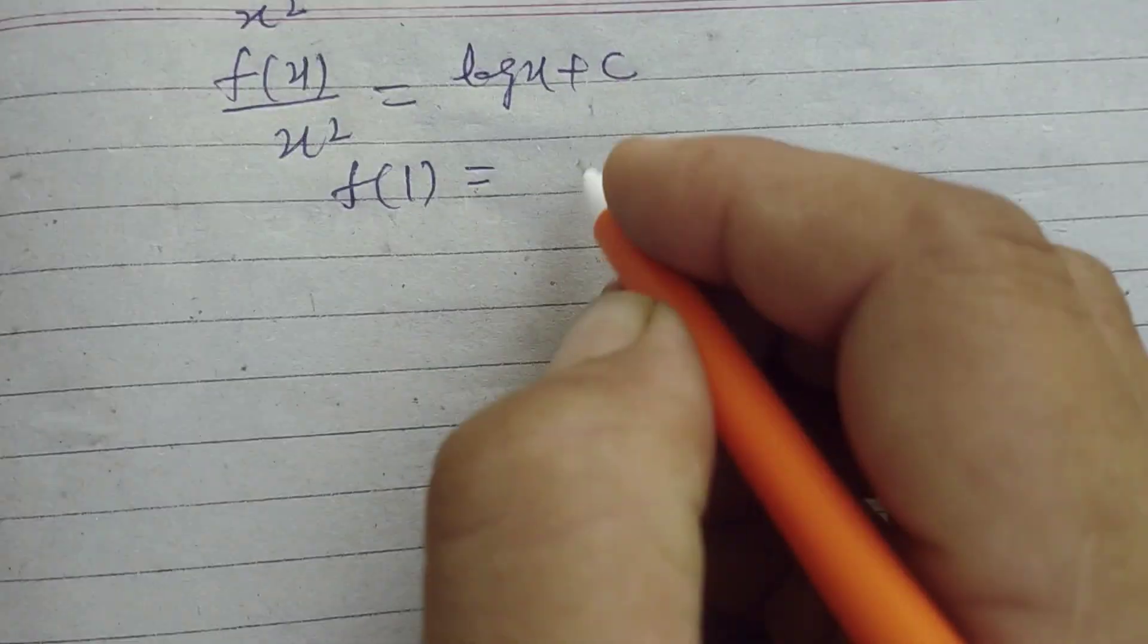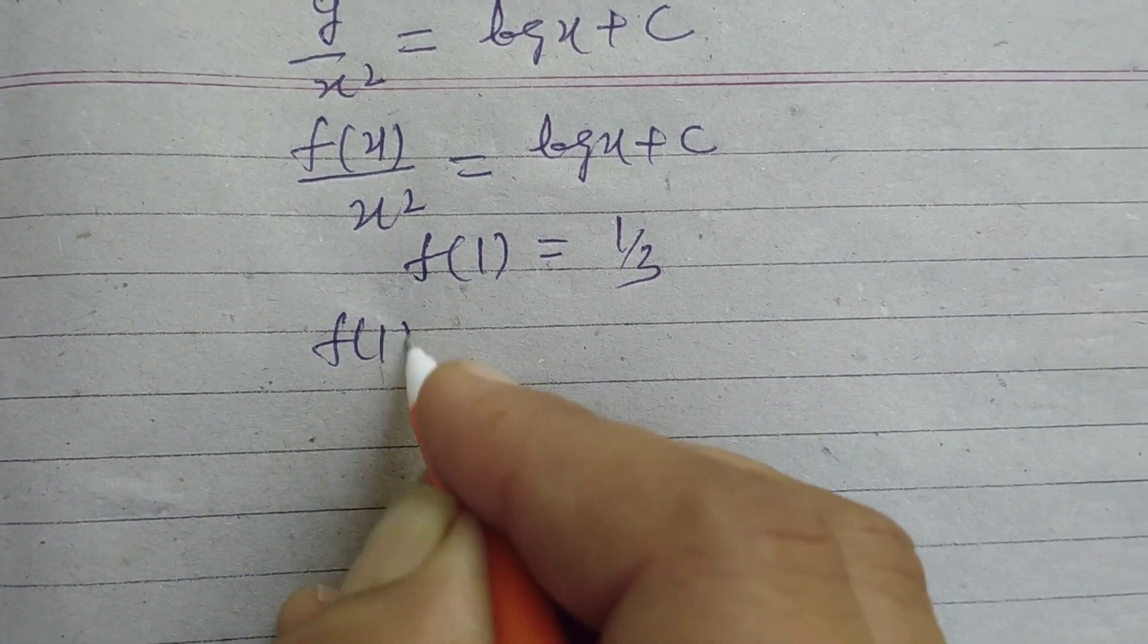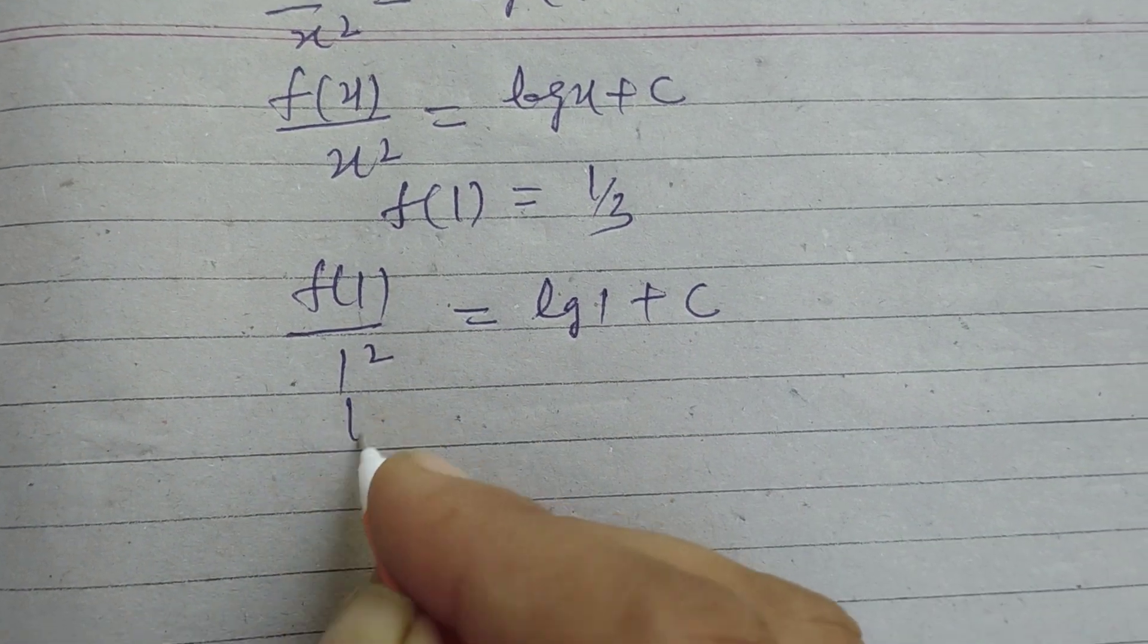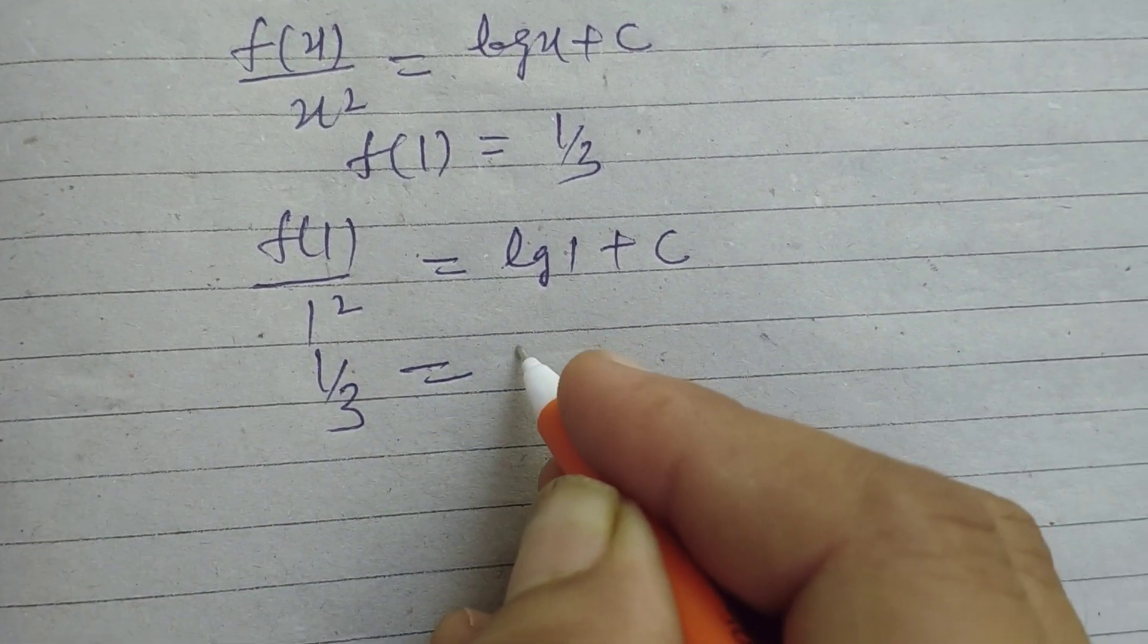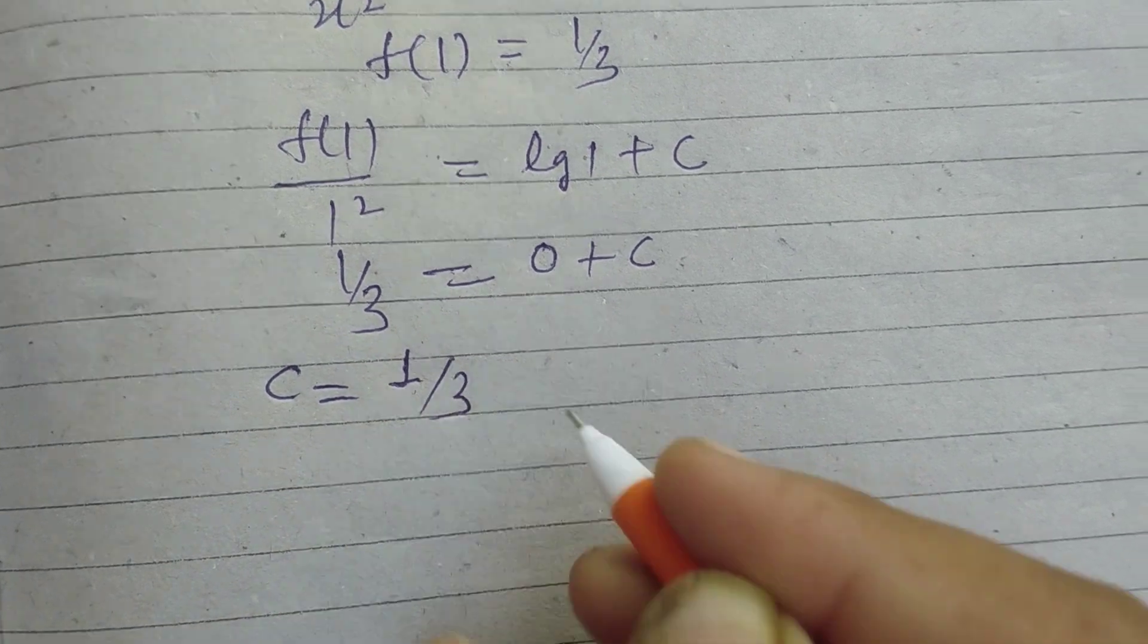So we put f(1) = 1/3: (1/3)/1² = log 1 + c. Since log 1 = 0, we get c = 1/3.